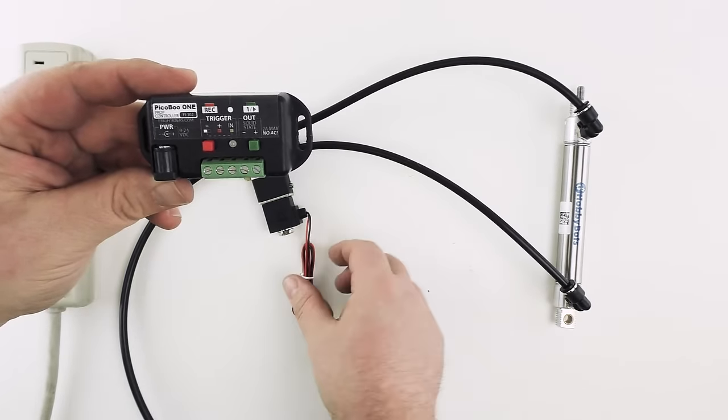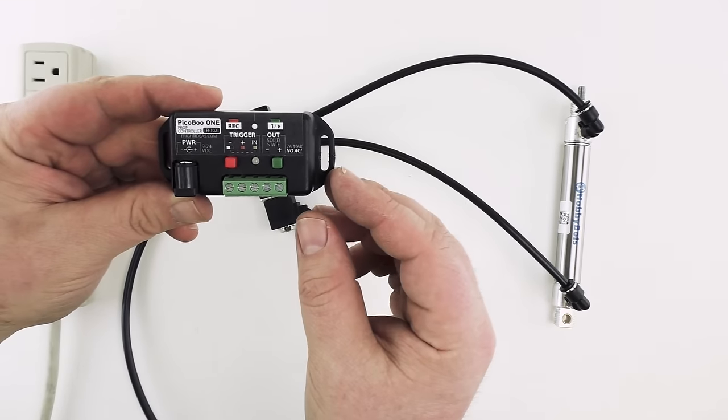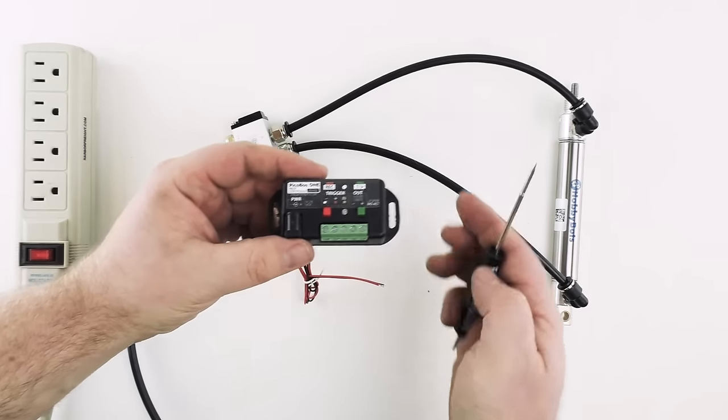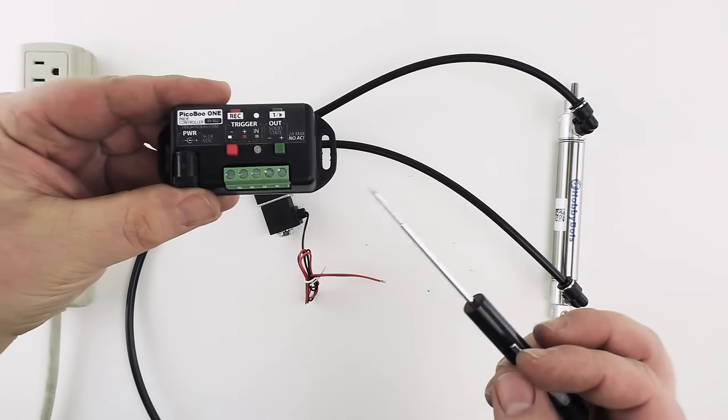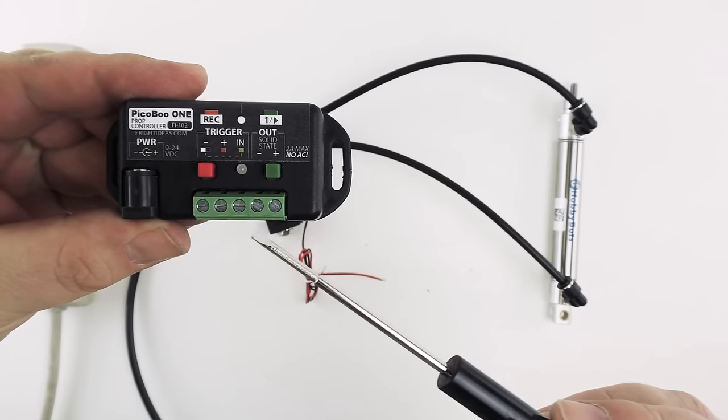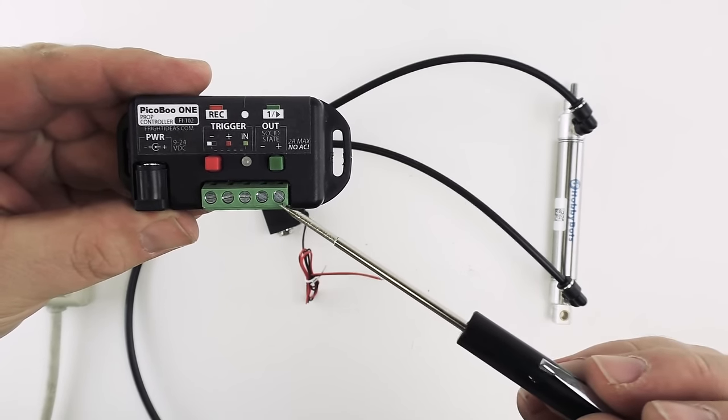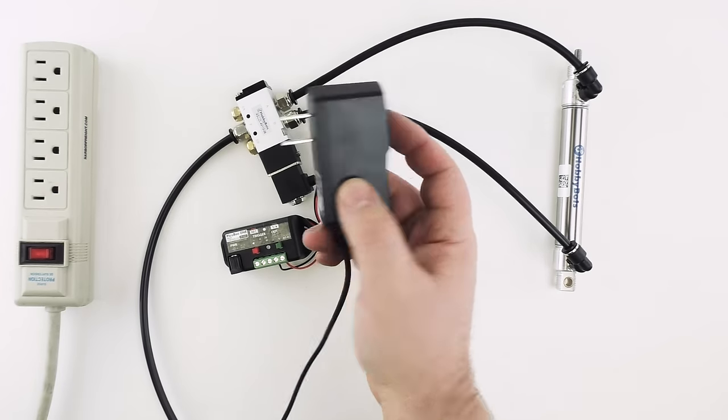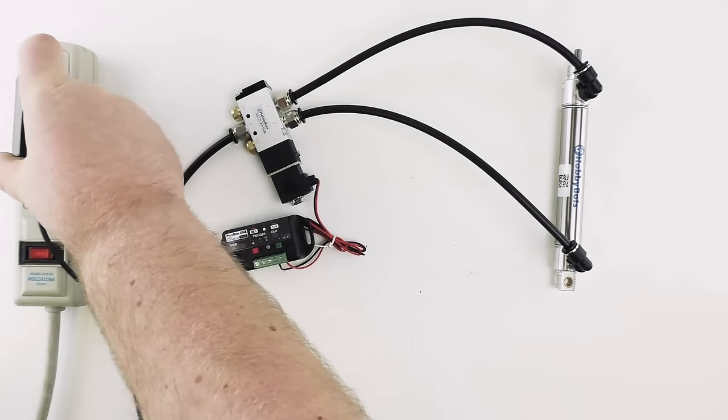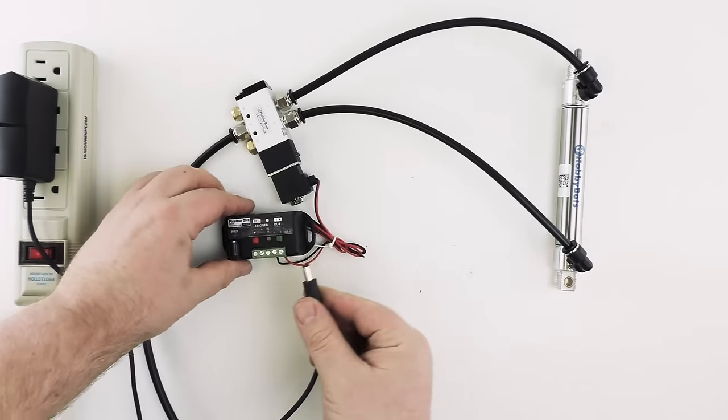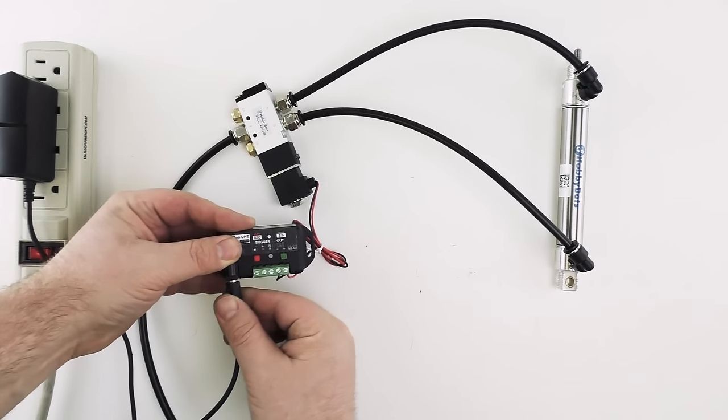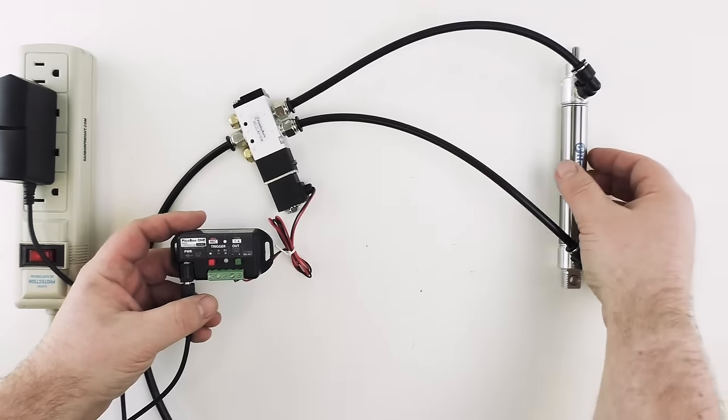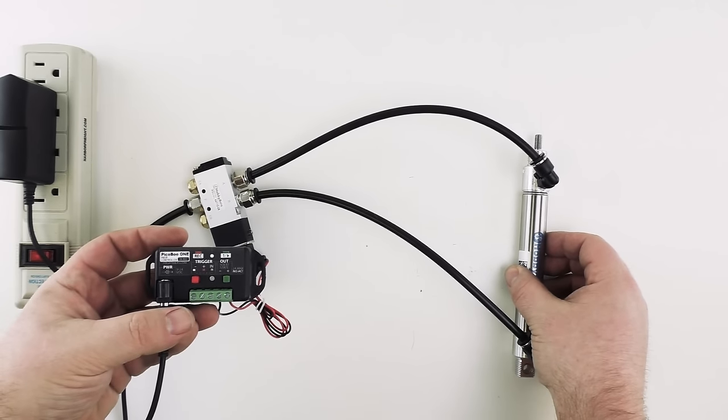We'll insert the power supply. We'll wire our solenoid up to the controller and we'll give it a quick program. To wire the solenoid to the controller we're just going to take the red and black wires and put them into the negative and positive terminals on the output. Red will go to positive, black will go to negative. Alright we're going to plug in our 12 volt power supply. Hook it up to the controller. The controller will power on and we can now program a sequence of movements for our cylinder.